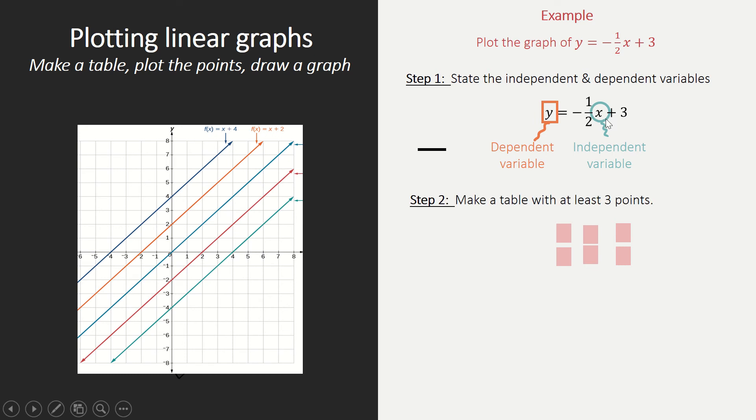Step two is to make a table with at least three points. The minimum amount of points that you need is two. However, to really make sure that you do it exactly correct and that you do not have any calculation mistakes, I really advise you to make a table with at least three points.